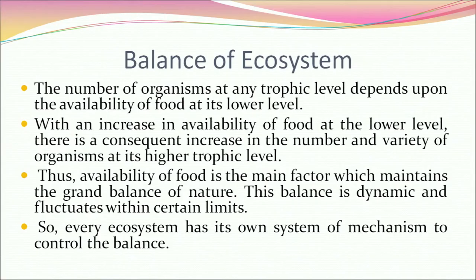The number of organisms at any trophic level depends upon the availability of food at its lower level. With an increase in availability of food at the lower level, there is a consequent increase in the number and variety of organisms at its higher trophic level. This availability of food is the main factor which maintains the grand balance of nature. This balance is dynamic and fluctuates within certain limits, and every ecosystem has its own mechanism to control the balance.